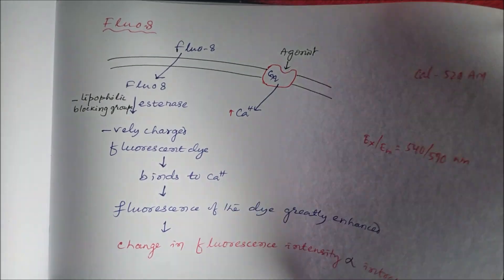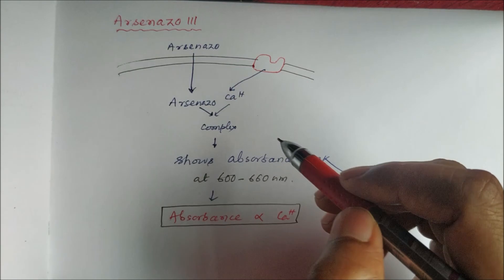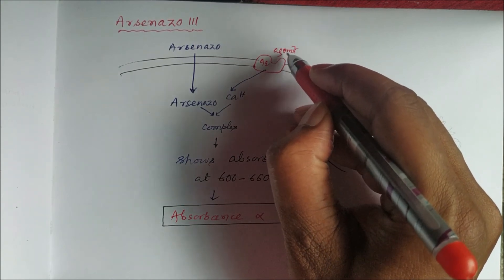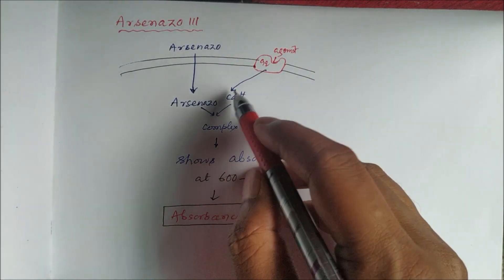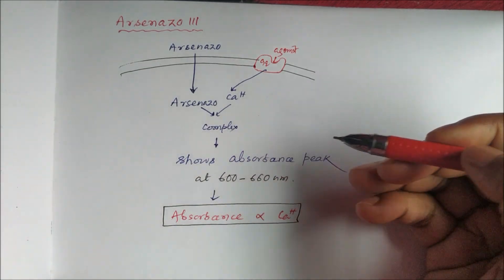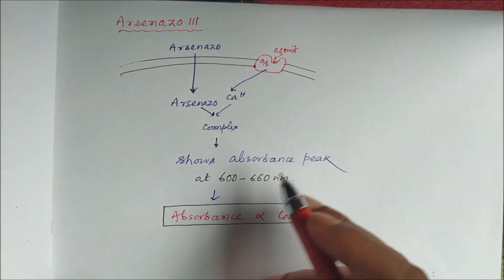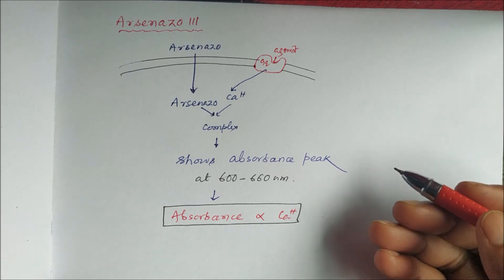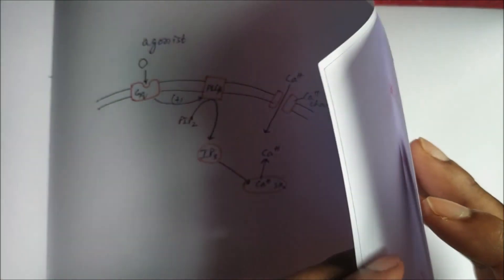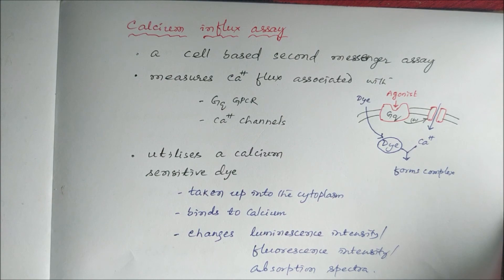Now let us take a colorimetric example: arsenazo 3. When the agonist binds to the specific G protein-coupled receptor, intracellular calcium increases. Arsenazo 3 enters the cytoplasm, binds to calcium, and forms a complex that shows an absorbance peak at 600 to 660 nanometers. This absorbance is directly proportional to calcium concentration, allowing us to measure intracellular calcium. This is the principle behind the calcium influx assay.